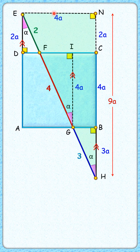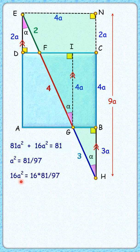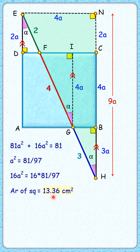Now in this right-angle triangle, applying the Pythagorean theorem, we get 9a squared plus 4a squared equals 9 squared, or 81a squared plus 16a squared equals 81, so a squared equals 81 over 97. Multiplying both sides by 16, we get 16a squared, which is the area of the square, equal to 16 times 81 over 97. The area of this square is 13.36 centimeters squared, and that's our answer.